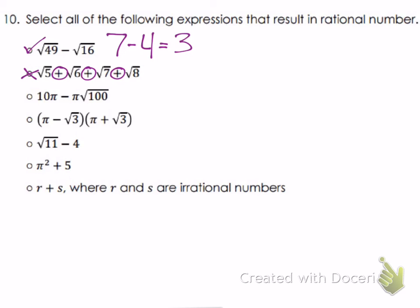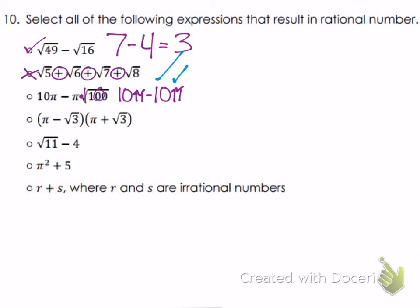Third expression: 10π minus π times √100. √100 = 10, so π times 10 = 10π. Using the commutative property, rewrite as 10π minus 10π. Anything subtracted by itself equals 0, and 0 is rational — so yes, this is rational.